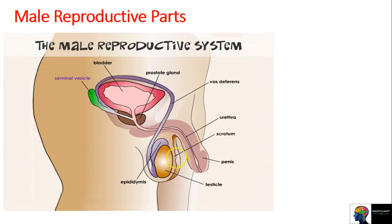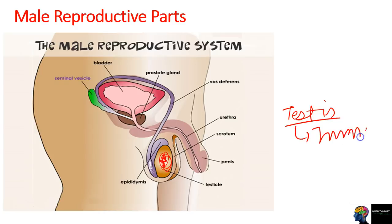Now let's see how this whole system works. Here are your testicles inside the scrotum. Inside the testicles, sperm production takes place. Then the sperms go and get stored in this tube called the epididymis. What does the epididymis do? The sperm produced in the testicles is immature. The maturity is gained here in the epididymis - sperms are stored here and mature for some time.